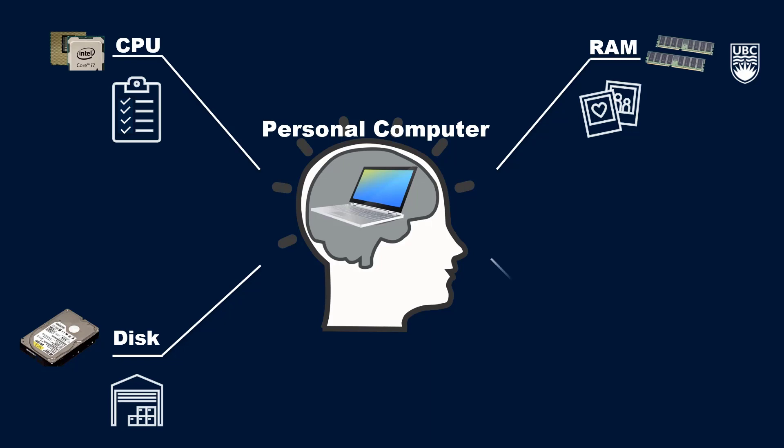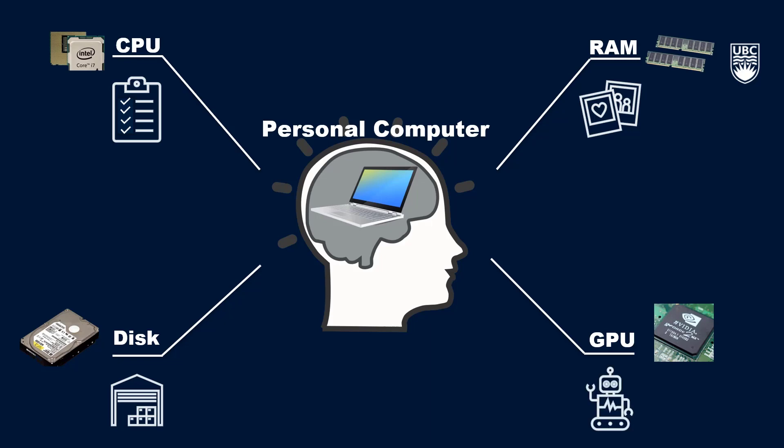Finally, computers have Graphic Processing Units, or GPUs, which traditionally have helped speed up the rendering of graphics to make things look really cool on your screen, but have recently been gaining use in more advanced types of computing, like artificial intelligence and machine learning.